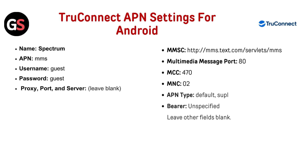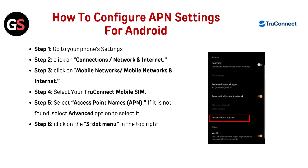APN Type: Default, Supl, DUN, Unspecified. Leave all other fields blank. How to configure APN settings for Android?